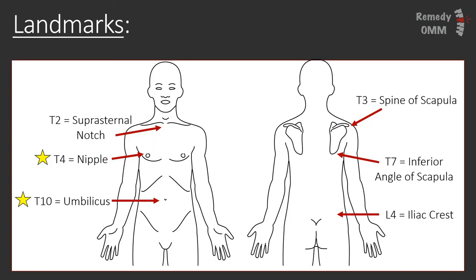This is high yield — you have to know your landmarks. Every test has at least one question where you have to know a landmark and which vertebral level it represents. The suprasternal notch represents T2, T4 is represented by the nipple, T10 by the umbilicus, T3 represents the spine of the scapula, the inferior angle of the scapula represents T7, and the iliac crest is represented by L4. You have to know these.